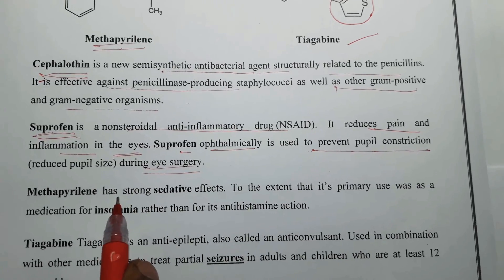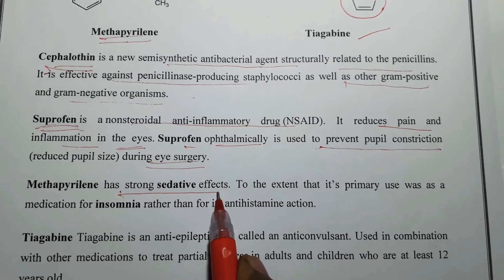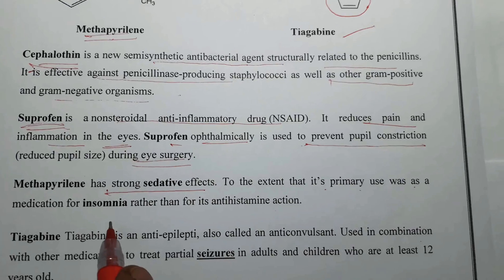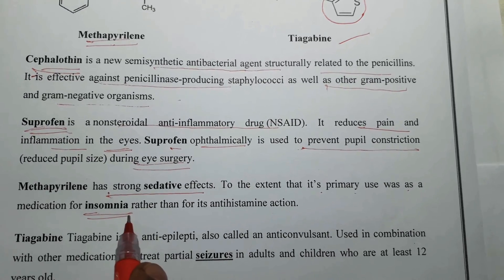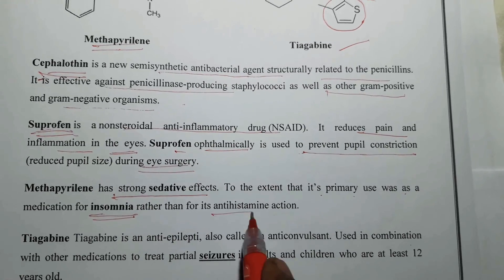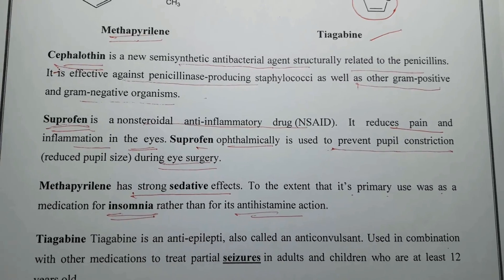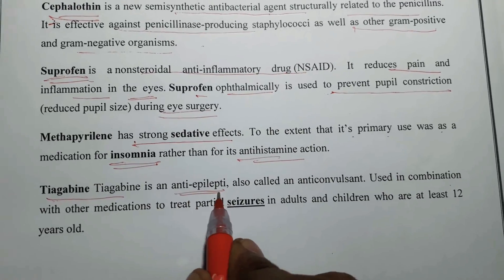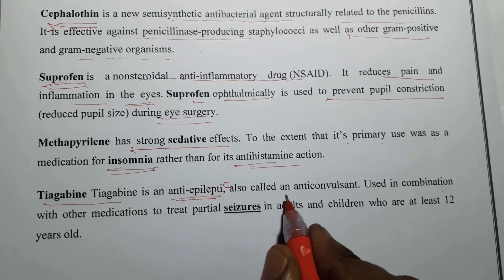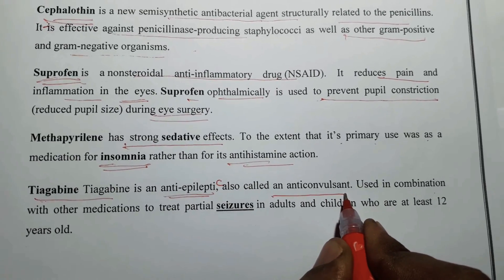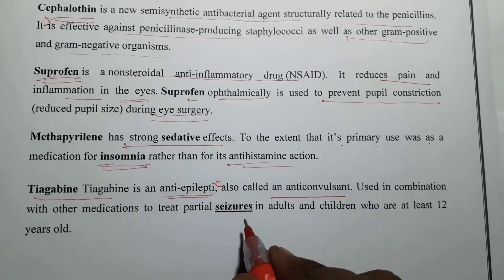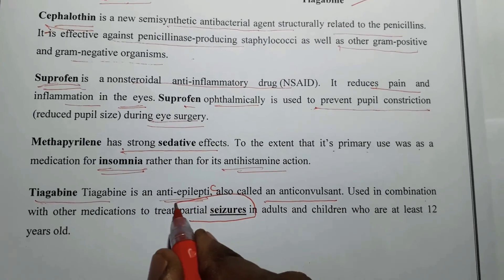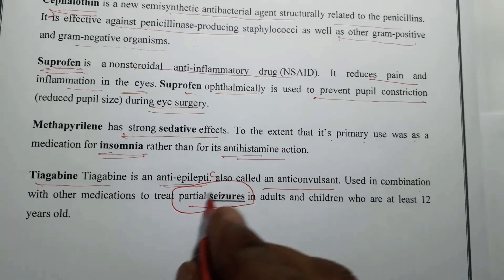Methapyrilene has strong sedative effects and is primarily used nowadays as a medication for the treatment of insomnia, rather than for its antihistaminic action. Tiagabine is an anti-epileptic drug, also called an anti-convulsant, used for the treatment of seizures or convulsions — especially partial seizures in combination with other drugs.